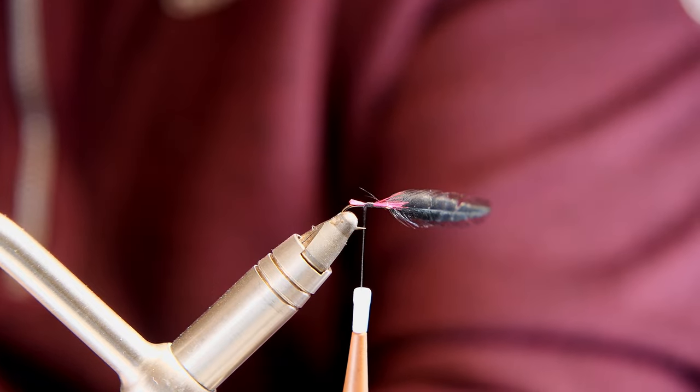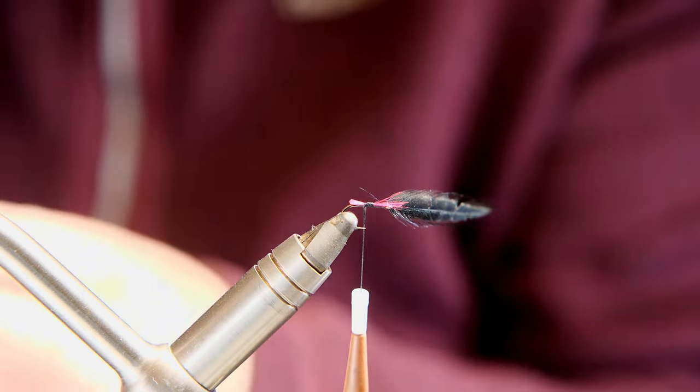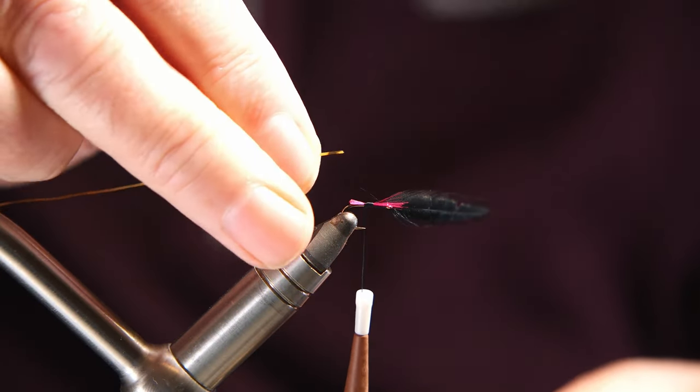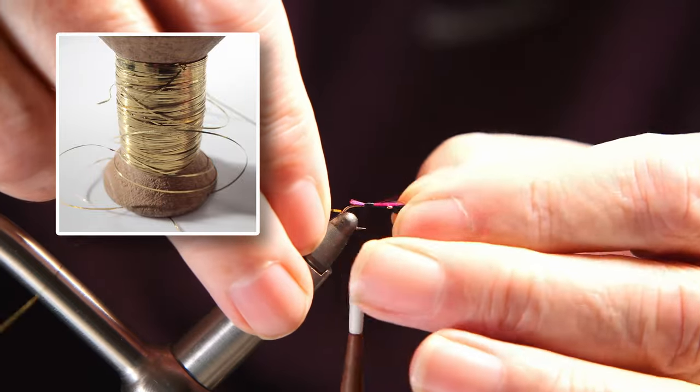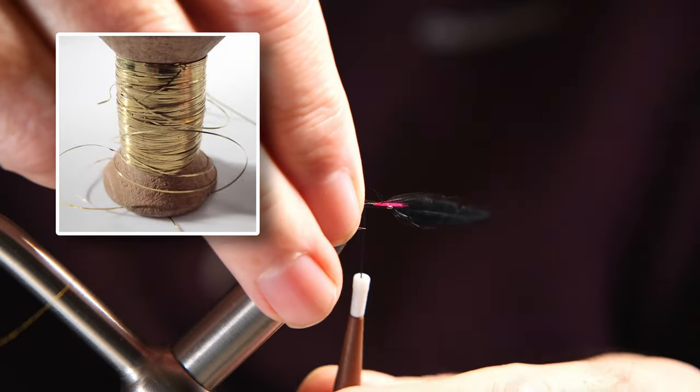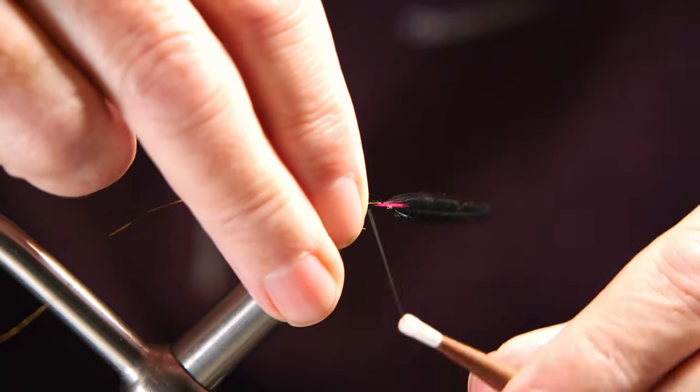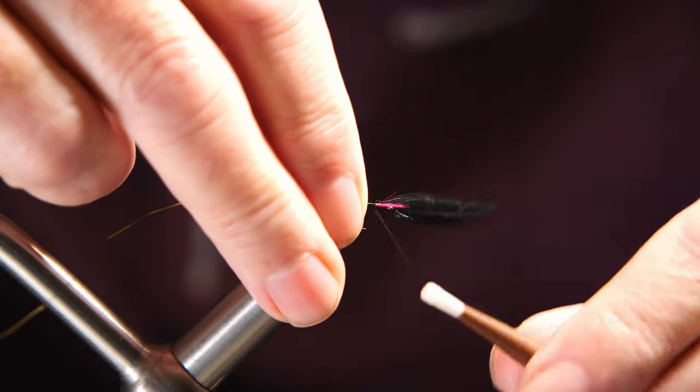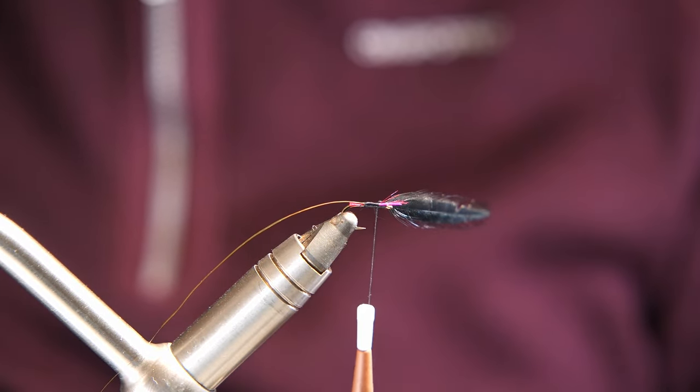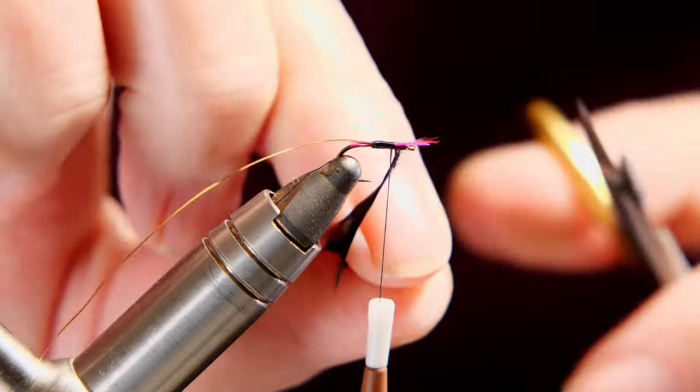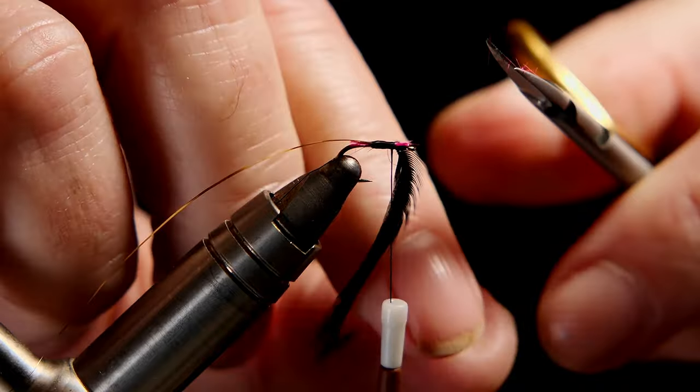But body-wise it's gold real tinsel, Veniards size three. I see those two fibers I wanted to get in the way but never mind. And I should have cut off this magenta earlier, never mind.